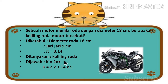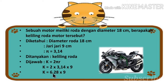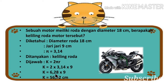Kita hitung terlebih dahulu yang ada di depan: 2 dikali 3,14, hasilnya adalah 6,28. Kemudian 6,28 dikali 9. Jadi kelilingnya adalah 6,28 dikali 9, hasilnya 56,52 cm.